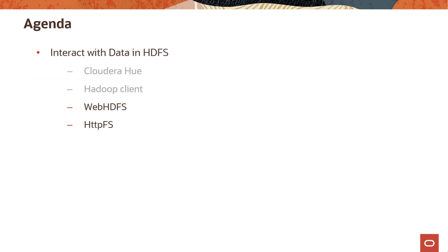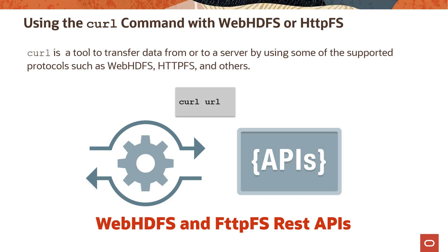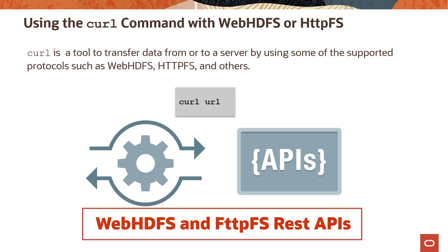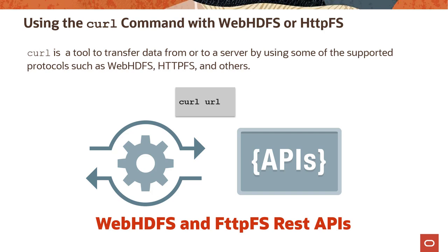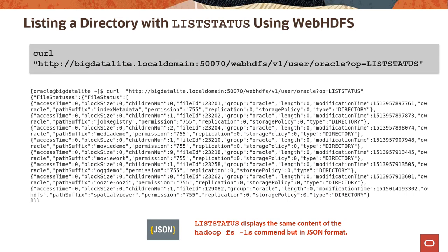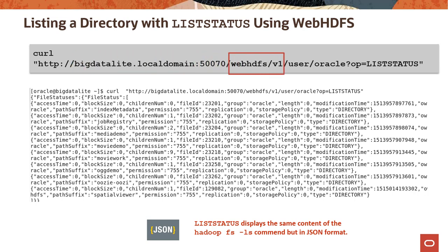Next, you will learn how to access HDFS data by using the curl command with the Web HDFS and HTTPFS protocols. If you do not have a Hadoop client installed, you cannot use the hadoop fs -ls command. In that case, you can interact with HDFS using either Web HDFS or HTTPFS REST protocols. REST is a popular way to access services in a language-agnostic way, and Hadoop supports it. Curl is a tool to transfer data from or to a server using one of the supported protocols, including Web HDFS and HTTPFS. To use Web HDFS to list the contents of a directory, you use the curl command with the list status operation, providing the host name, port number, the keywords webhdfs/v1, the path of the directory, and the list status operation.